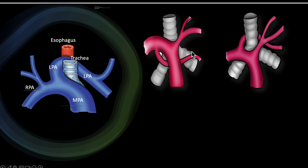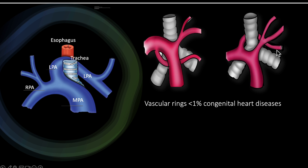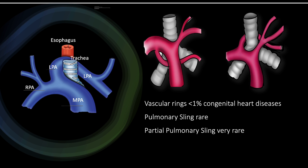There are three situations of a pulmonary vascular ring: total anomalous left pulmonary artery, partial anomalous pulmonary artery coming anterior to the trachea, and partial anomalous pulmonary artery going posterior to the trachea. Vascular rings are uncommon overall, accounting for less than 1% of congenital heart disease. Pulmonary slings are rare, partial pulmonary slings are even rarer, and reporting in prenatal diagnosis is presumed to be extremely rare.